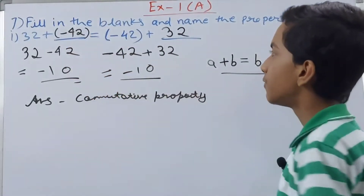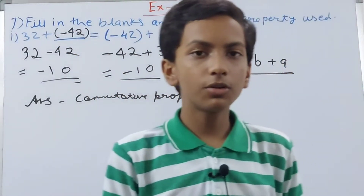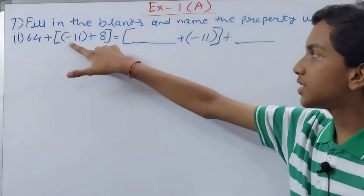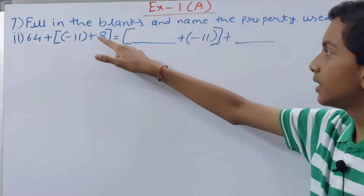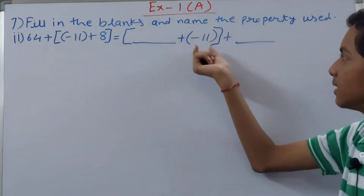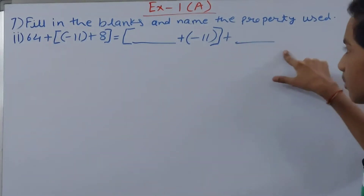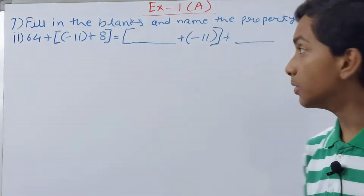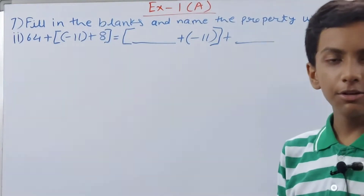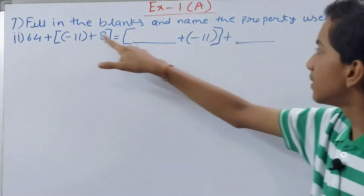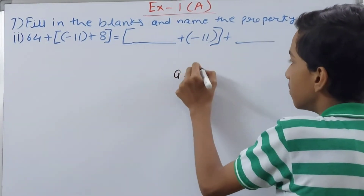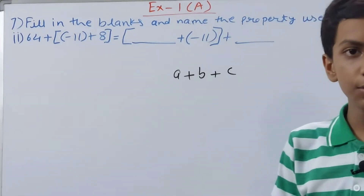Now let us move on to the next part: 64 + [(−11) + 8] = [64 + (−11)] + 8. We have three numbers here: 64, −11, and 8. You can see that one number appears in both sides. We have a, b, and c — so we need to think about which property applies here. That is the associative property.